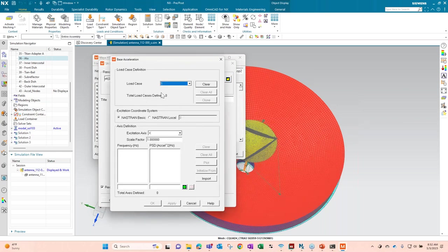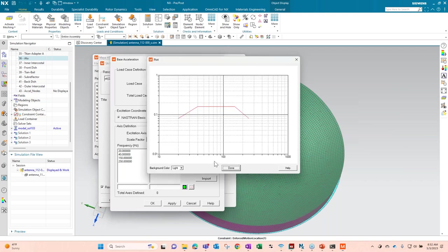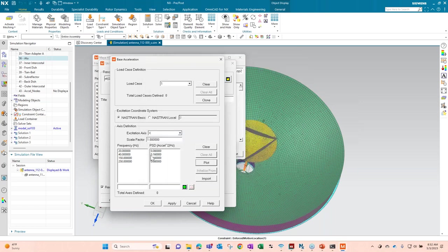But first we have to define our input. I'm going to go ahead and import a curve that I already created. Just a simple dummy curve I created. Didn't pull it from anywhere. I made it off the top of my head, but something reasonable. I do need to add a scale factor for the units of gravity. My model's in millimeters. So you need to add 9,810. And I'll go ahead and click apply. So we've created one load case in the X direction with that input.